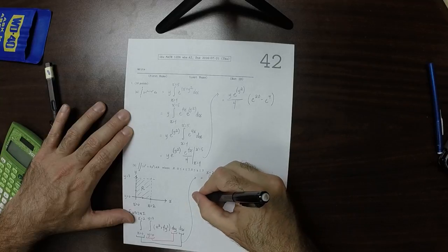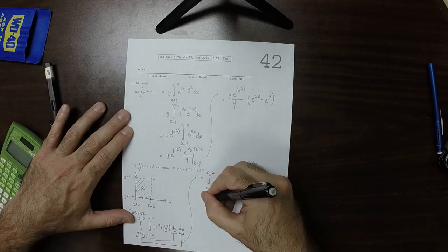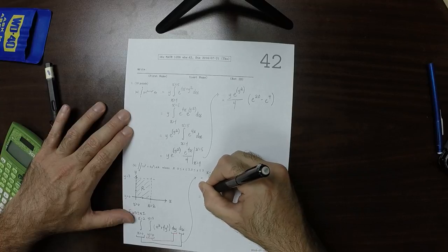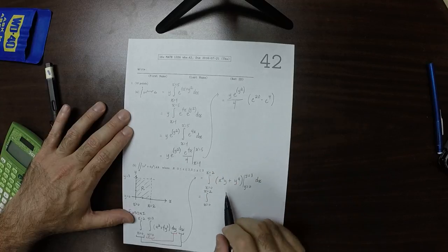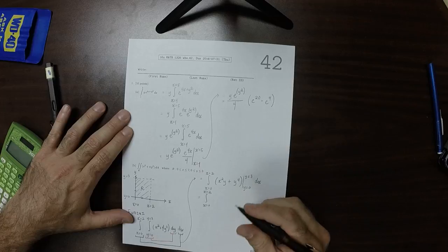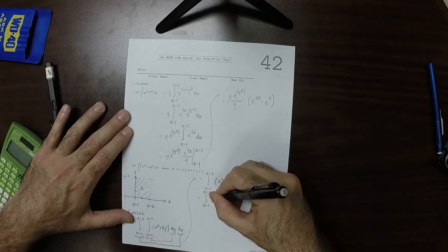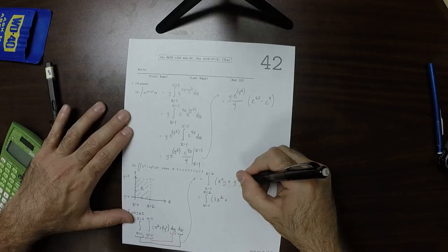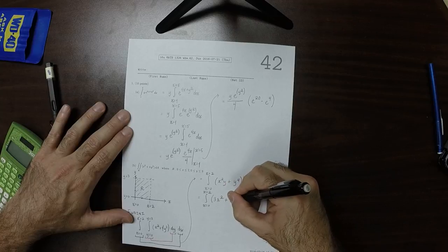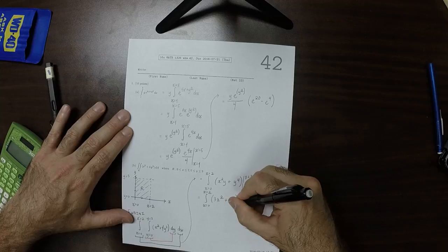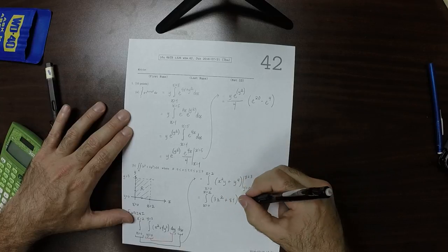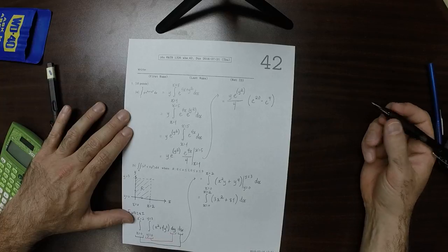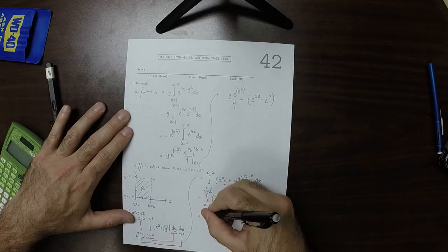Conveniently, one of the evaluation points is 0. So, that would be integral x is 0 to x is 2. And then, this expression evaluated at 3 is 3x squared, and then, plus 3 to 4 is 81. And then, when you evaluate this at 0, you get 0. So, dx,